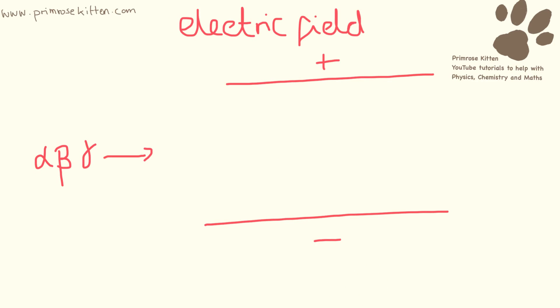In an electric field, again, the gamma radiation is going to go straight through. The beta radiation, which remember is a negative electron, is going to be attracted to the positive side. And the alpha radiation, which we remember is a helium nuclei, is going to be attracted to the negative side.